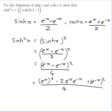When you do a power of a power, you multiply the powers together, so e to the x squared gives e to the 2x. Minus 2 e to the x times e to the minus x — when you multiply powers you add them, so x minus x is 0, giving e to the 0 which is 1. Plus e to the minus 2x, all over 4.